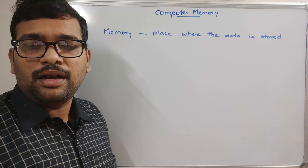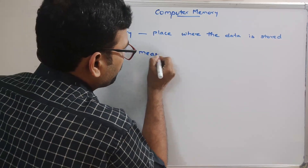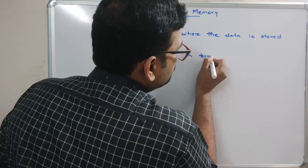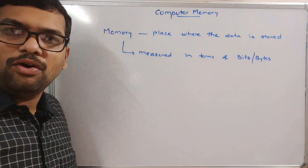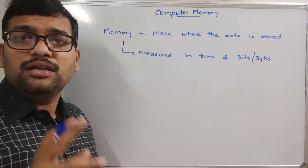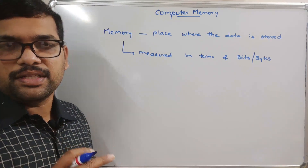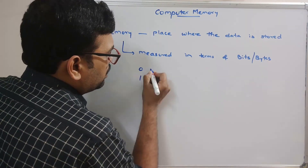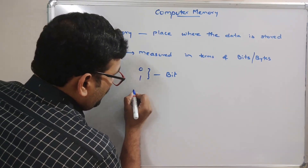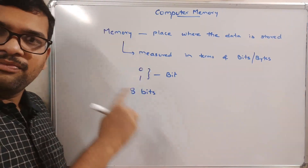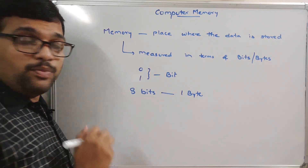So how do we measure this memory? For everything there will be some measurements. This memory can be measured in terms of bits or bytes. We know that the computer can understand only two digits — zero or one — that means we call it binary language. Either zero or one is called a bit.